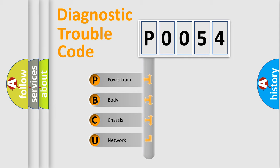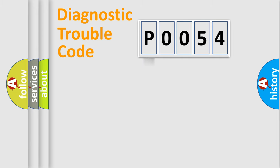We divide the electric system of automobile into four basic units: Powertrain, Body, Chassis, and Network. This distribution is defined in the first character code.